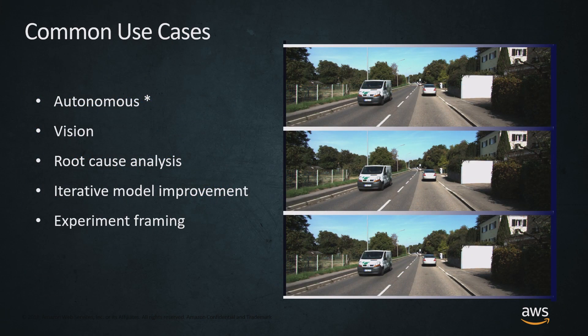Some common use cases: autonomous vehicles — pretty much every self-driving solution needs an incredibly large amount of very high-quality training data. Many vision scenarios leverage data labeling solutions. Root cause analysis is also fairly common — if you have a model telling you how healthy a machine is, say in airlines or manufacturing, it's common to have a model predict machine failure likelihood, but then you need an operational engineer to classify what's actually going on. Root cause analysis is a very common way of leveraging SageMaker Ground Truth.